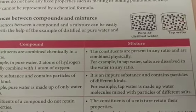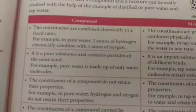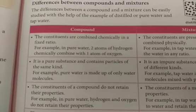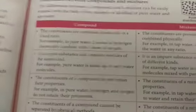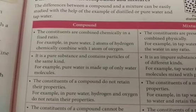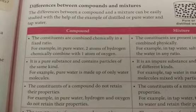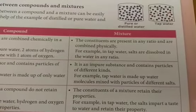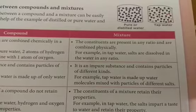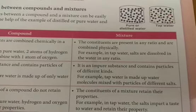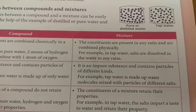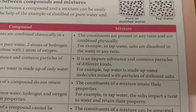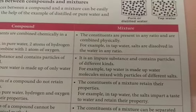Compounds are pure substances and contain particles of the same kind. For example, pure water is made up of only water molecules. In contrast, mixtures are impure substances that contain particles of different kinds. For example, tap water is made up of water molecules mixed with particles of different salts.